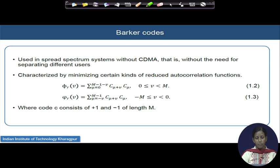Our next discussion is on Barker codes. Barker codes are utilized in spread spectrum communications mainly for synchronization purposes. Because the number of available Barker codes is very small and their code lengths are also not remarkably high, they cannot be utilized for multi-user support or spreading sequences to avoid jamming, but they are very useful for synchronization purposes.